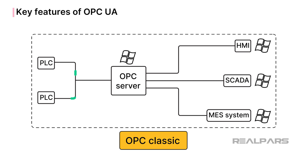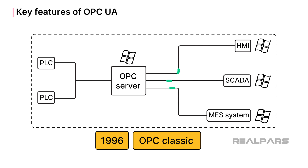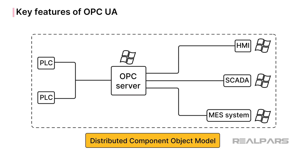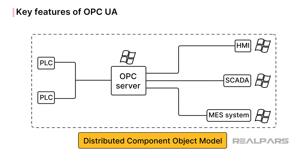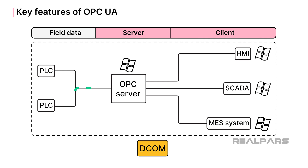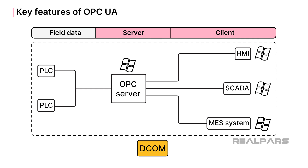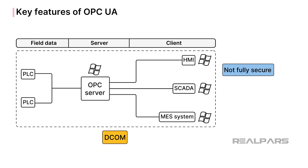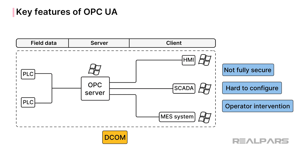OPC Classic opened the door for control system applications to share data quickly with minimal configuration. It was first released in 1996. This method was based on the Microsoft Distributed Component Object Model, or DCOM, services for client-server communications. While DCOM has some authentication features built in, it is not fully secure, hard to configure, and usually requires operator intervention to correct when a failure occurs.